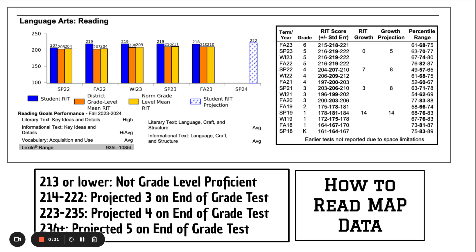If your child has been in this school system for their whole school career, their scores will be on here for every MAP test they've ever taken. So this child's data shows kindergarten, first grade, second grade, third grade, fourth grade, and it goes up. The fall 2023 score of sixth grade is the test that they just took.